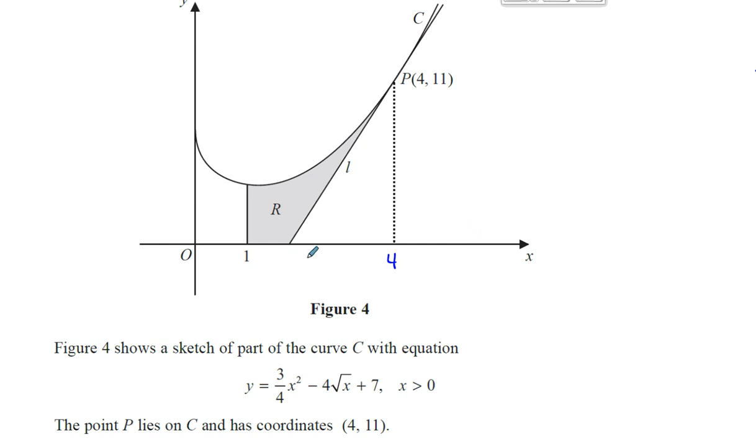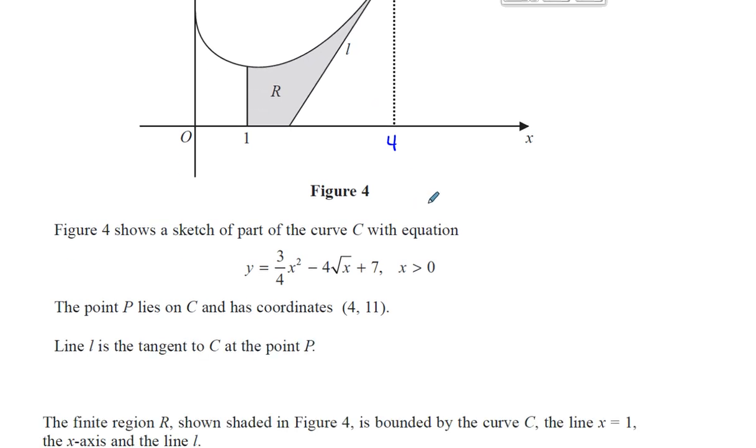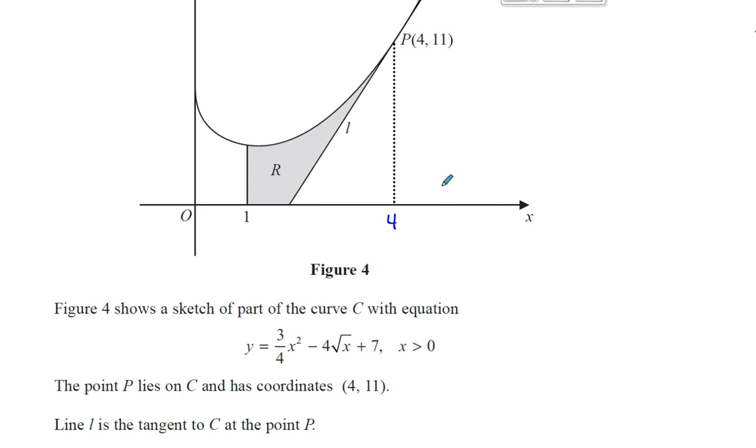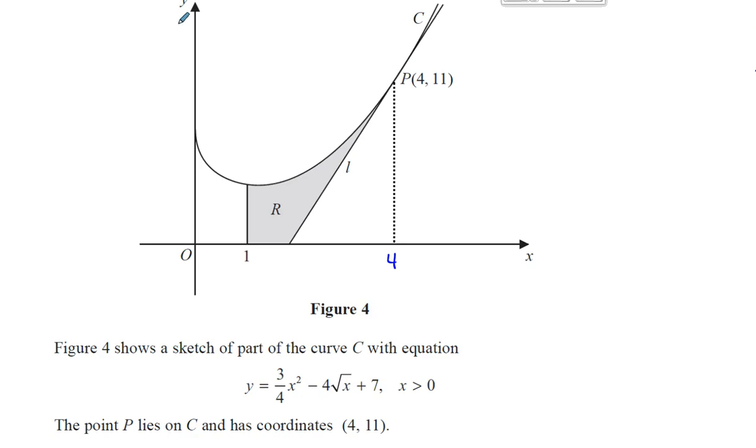Now, what we need to know is a few things. If we find the area under the curve between 1 and 4, that will be the whole of this area here. If I remove from that, or take away from that, the area of this triangle, I would have basically found the equation. I would have found the area that I need.